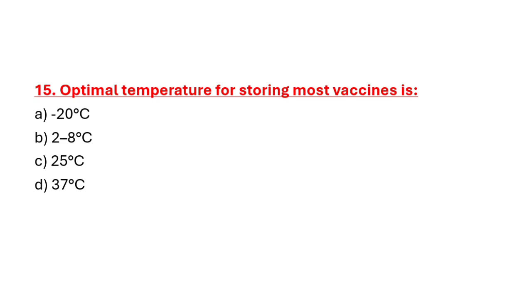Question 15: Optimal temperature for storing most vaccines is. Option A: Minus 20 degrees centigrade. Option B: 2 to 8 degrees centigrade. Option C: 25 degrees centigrade. Option D: 37 degrees centigrade. Correct answer is Option B: 2 to 8 degrees centigrade.